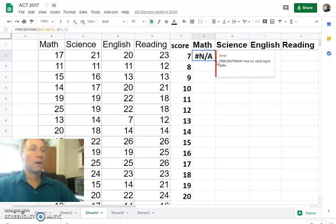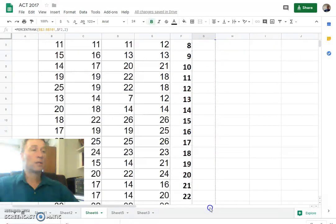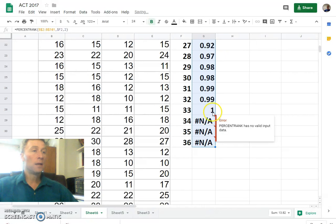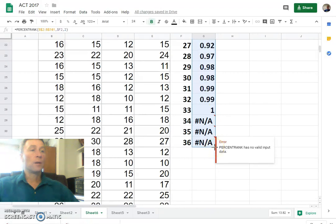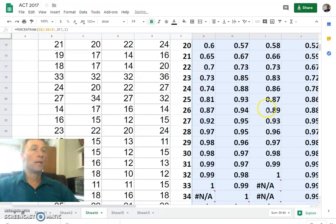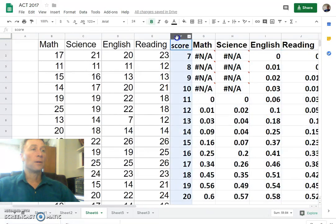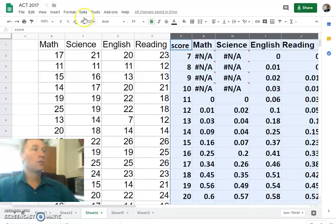So now I can select that corner of that cell and make a bunch like that all the way down to a score of 36 on the ACT. There weren't any students that scored above 33 in math, so 100% are below that value. And if I grab the corner here and do English and reading and all that, now let's see what they look like in a chart.